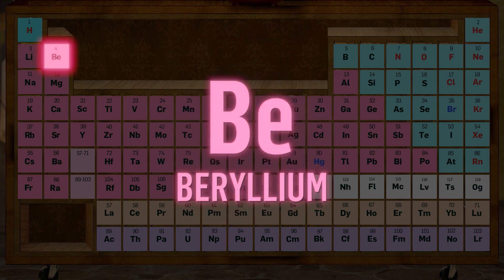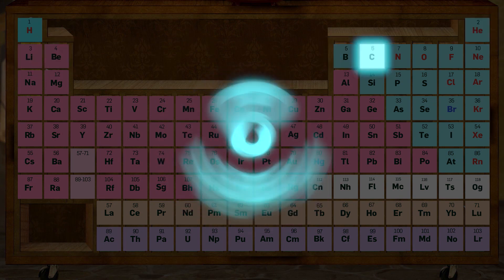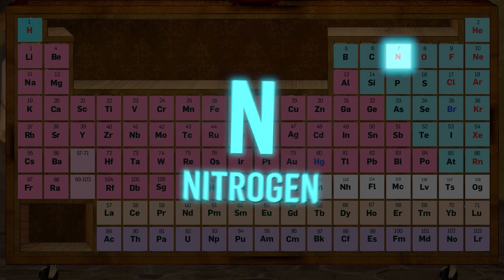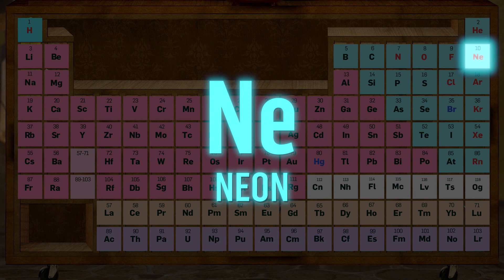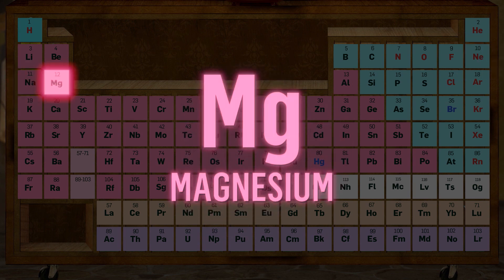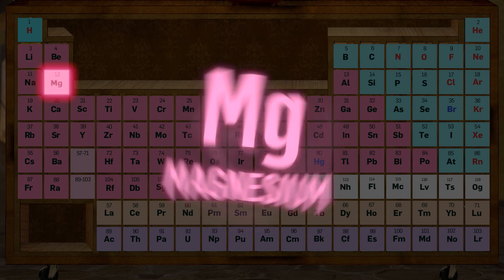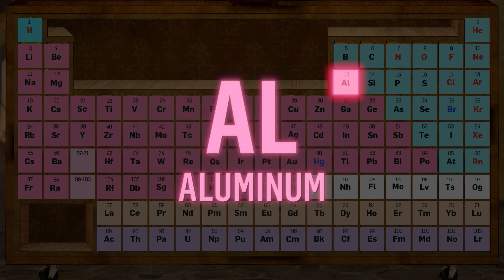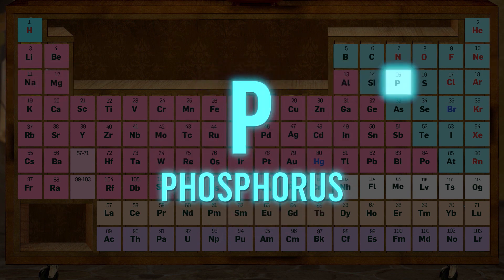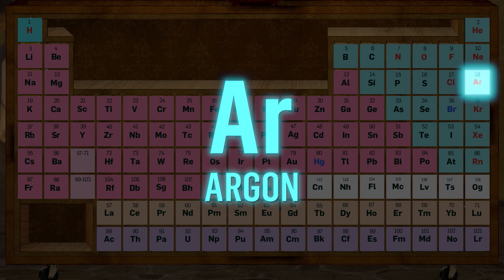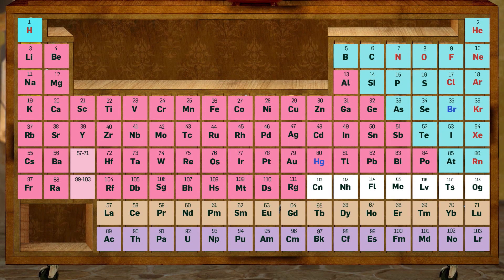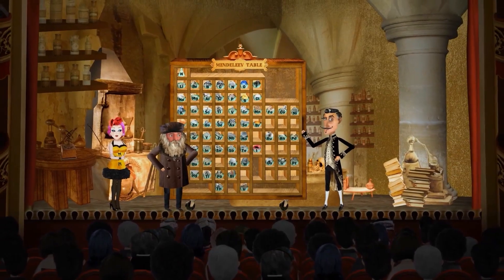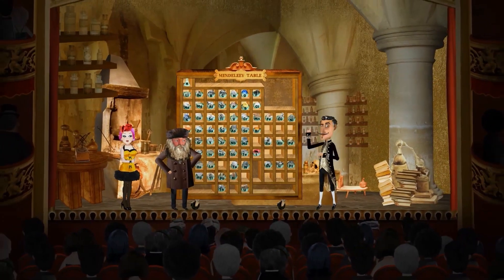Hydrogen, helium, beryllium, carbon, hydrogen, oxygen, fluorine, neon, sodium and magnesium, aluminium, silicon, phosphorus, sulfur, chlorine, argon, potassium, calcium — they live in the periodic table.